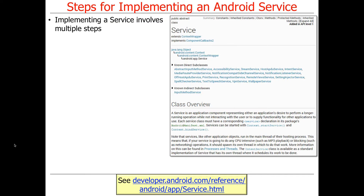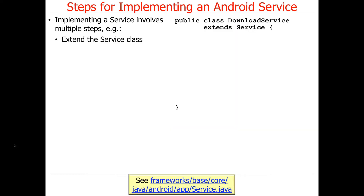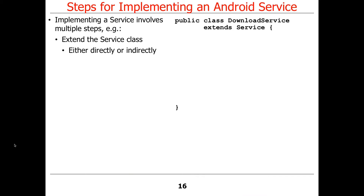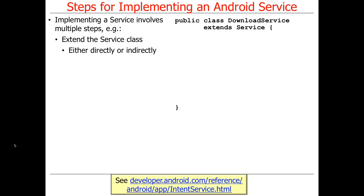So how do we implement a service? The first step is to extend the service class, either directly by extending Service, or indirectly by extending IntentService — which is itself a Service. Those doing the undergrad version of assignment four will need to get familiar with IntentService, as that's the main thing they'll need to write. IntentService is quite easy to write.